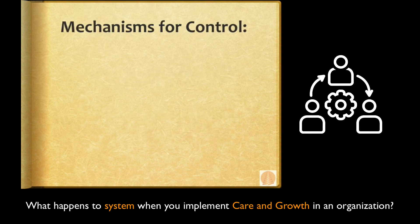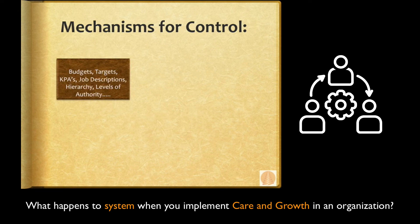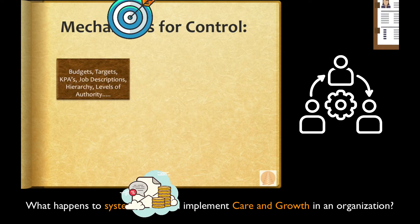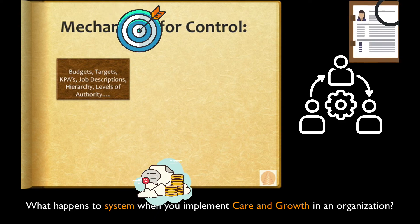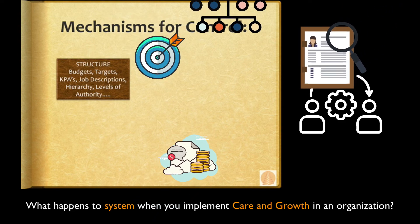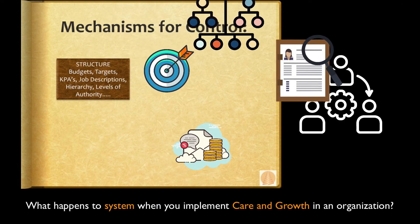The mechanisms of control in an organization are concerned with issues like budgets, targets, KPAs, job descriptions, hierarchies, and levels of authority — and these are all concerned with structure.